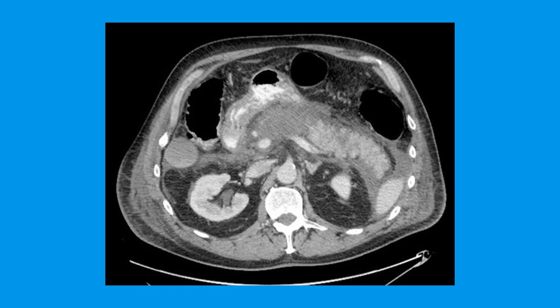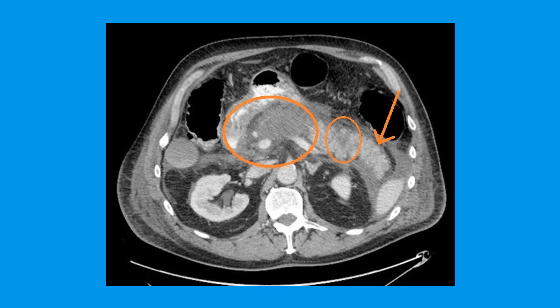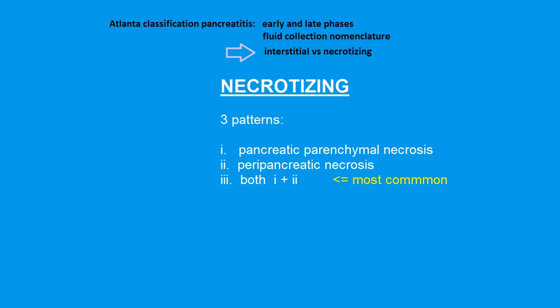Here's a nice case of acute pancreatitis, with the edematous pancreas circled in orange and the more normal-appearing pancreas tail indicated by the orange arrow. Necrotizing pancreatitis involves two parameters: either parenchymal necrosis, peripancreatic necrosis, or more commonly, both of them.